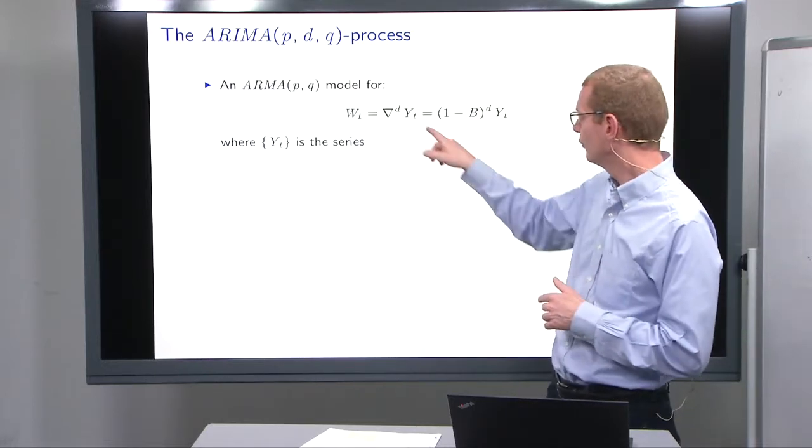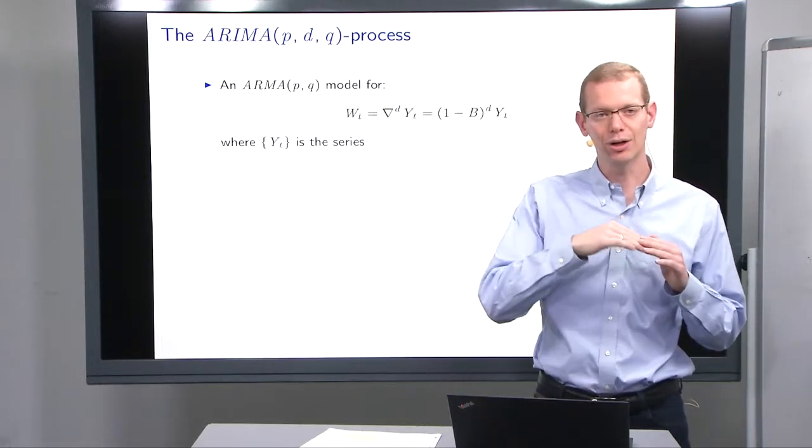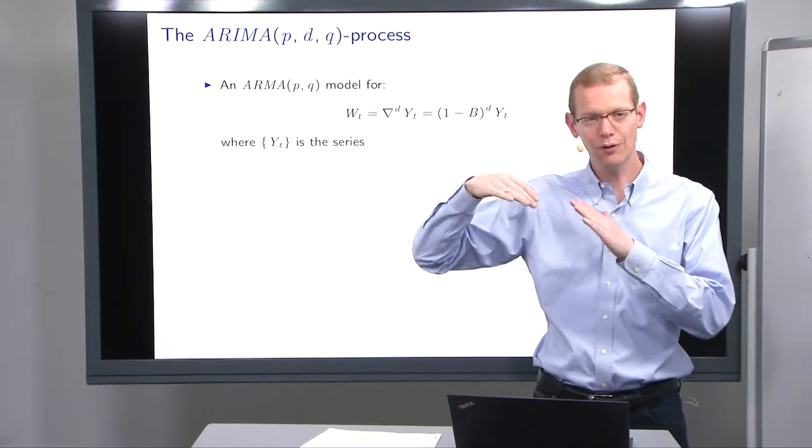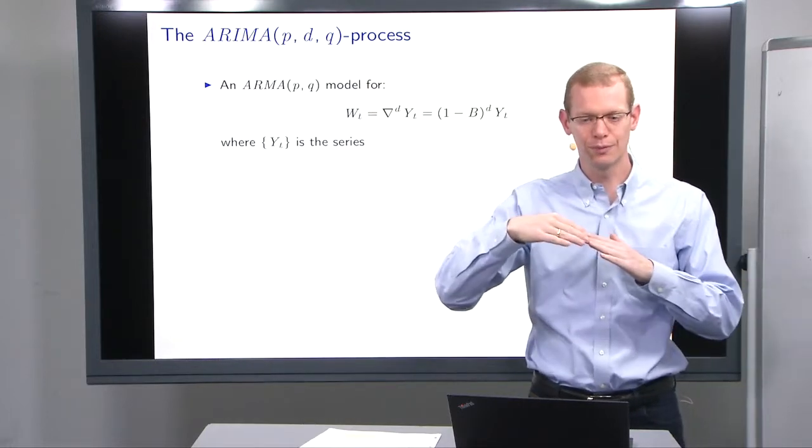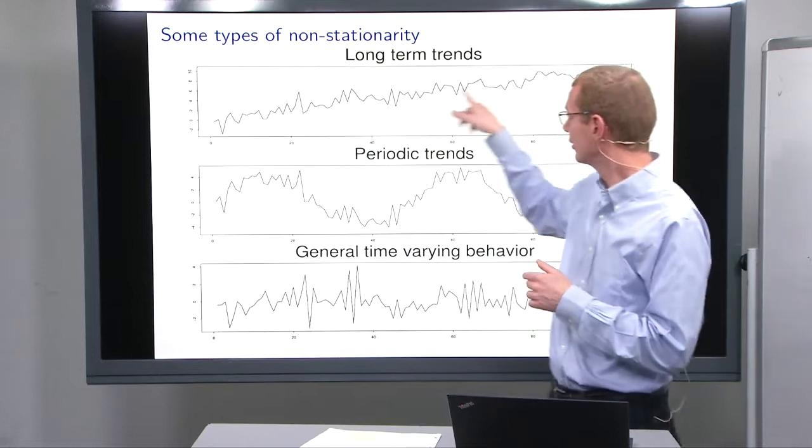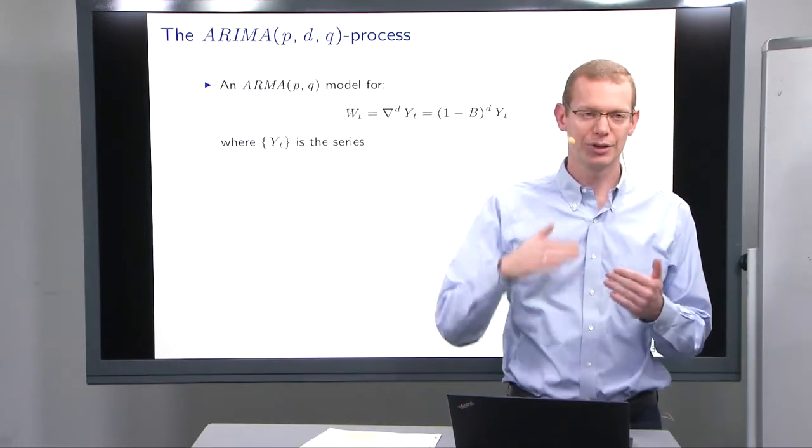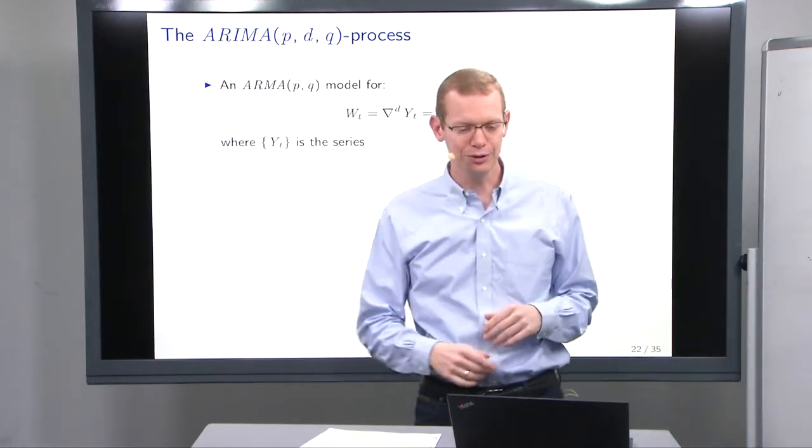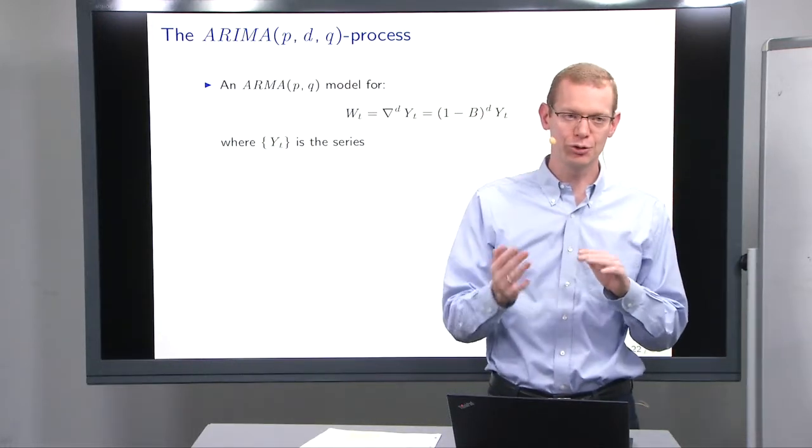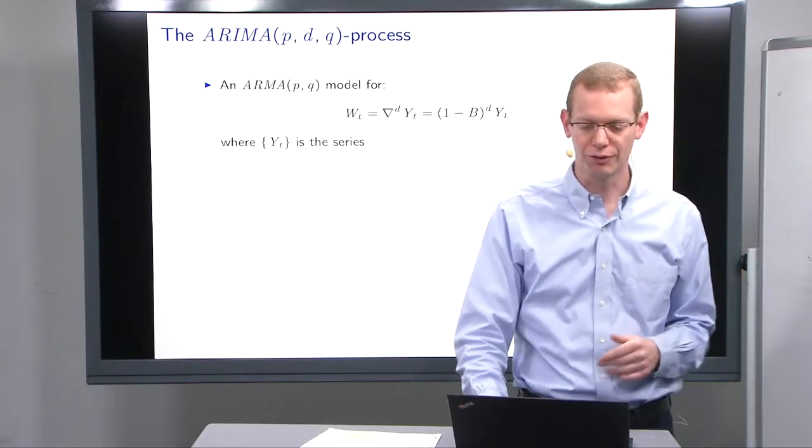When d is 1, when you're differencing one time, you're modeling the slope of things, differences in slope. So that is what could cover stuff like this. A fixed slope becomes then a mean value that is different from 0. If you go for d equal to 2, you are modeling the curvature as the second order derivative.